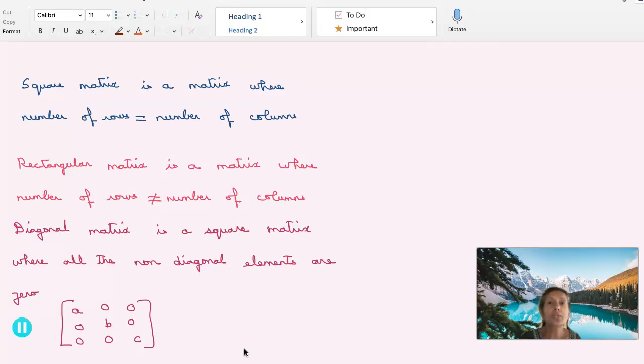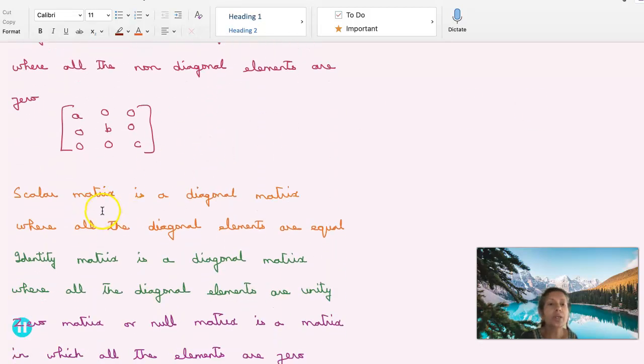We start with a square matrix. A square matrix is a matrix where number of rows equal to number of columns. A rectangular matrix is a matrix where number of rows is not equal to number of columns. Diagonal matrix is a square matrix where all the non-diagonal elements are zero. A scalar matrix is a diagonal matrix where all the diagonal elements are equal. So if all the diagonal elements are a, a, a, it is a scalar matrix.